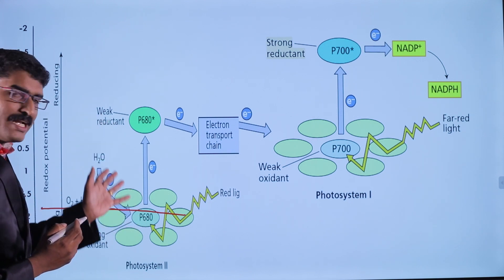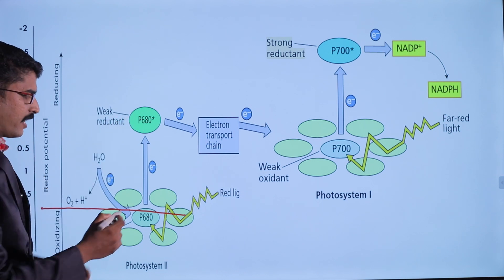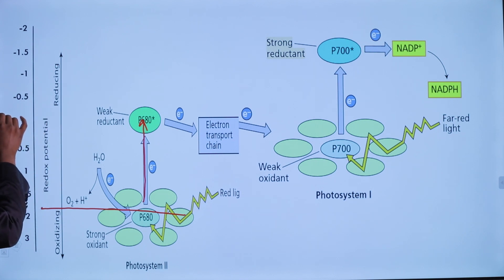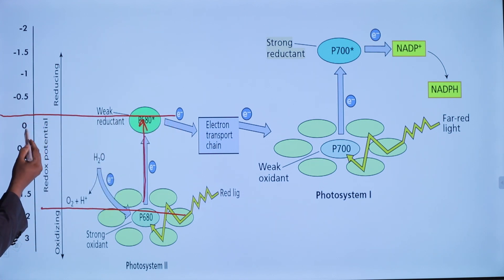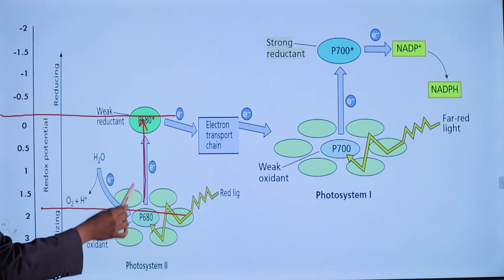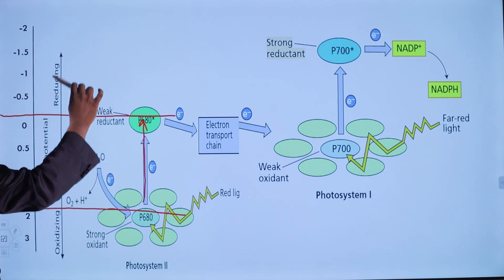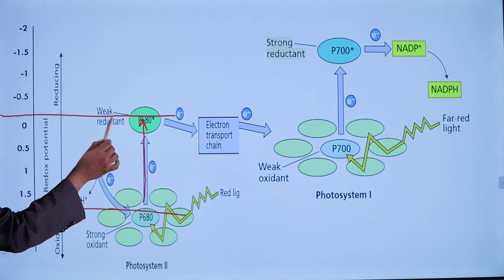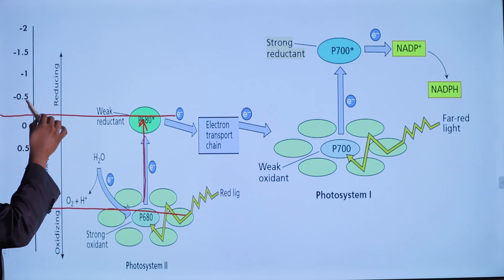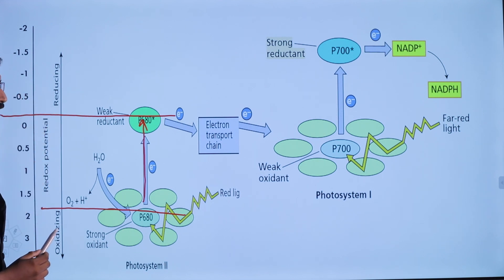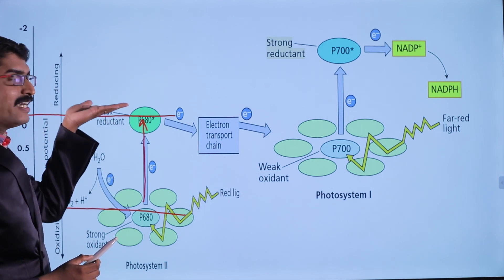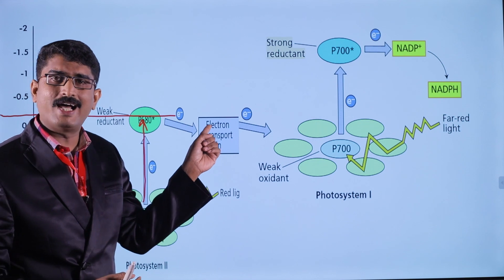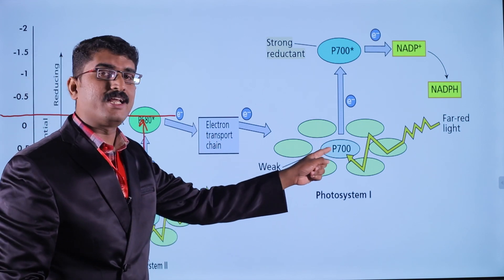When p680 gets these electrons and absorbs energy from red light, it comes to an excited state. In the excited state, p680 moves to a point just between 0 and negative 0.5 on the redox scale — acting as a weak reductant, not a strong reductant. As a weak reductant, it tends to release electrons, which pass through various components of the electron transport chain.